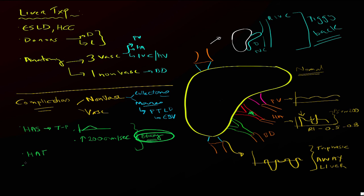Portal vein issues are not as common. Portal vein stenosis is very uncommon; the suggested criteria are a velocity ratio increase of 3:1 and an absolute velocity greater than 125 cm/s within the portal vein. If you see these findings, that suggests portal vein stenosis. However, remember that there may be a mismatch at the anastomosis that can give similar findings, so you really need to take that into account when evaluating these livers.